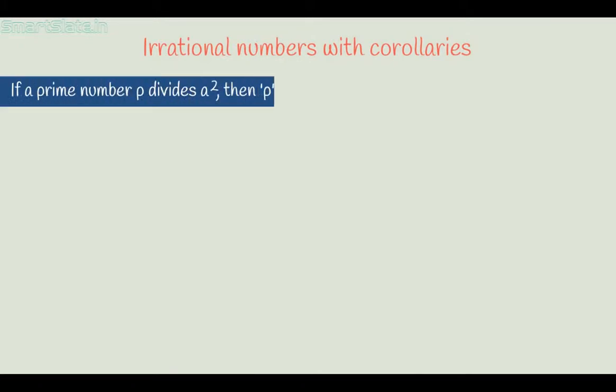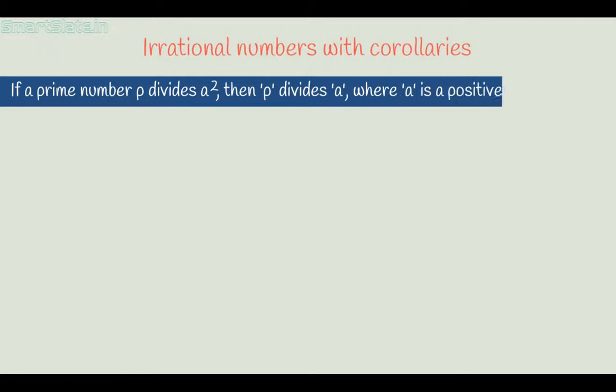There are three corollaries you should remember. I will prove one corollary in this video. The corollary states: if a prime number p divides a squared, then p divides a, where a is a positive integer. Since any composite number can be represented as a product of prime factors.